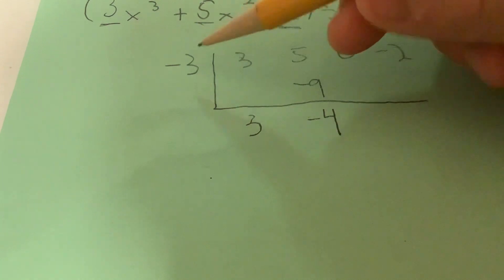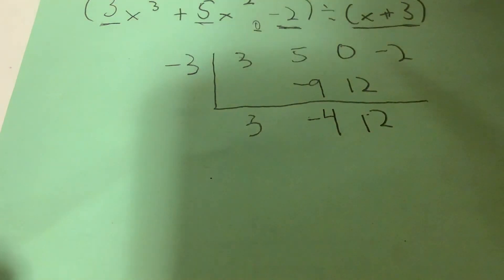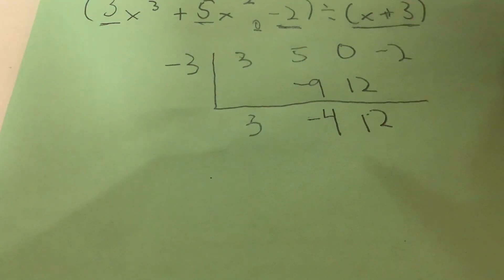Then, you multiply these again, you get 12. Add these, you get 12. And then, you multiply again, so you get negative 36. And then you get negative 38.